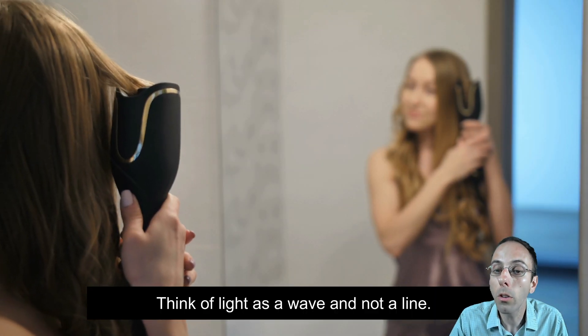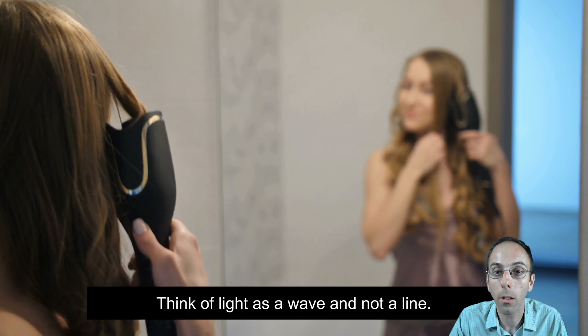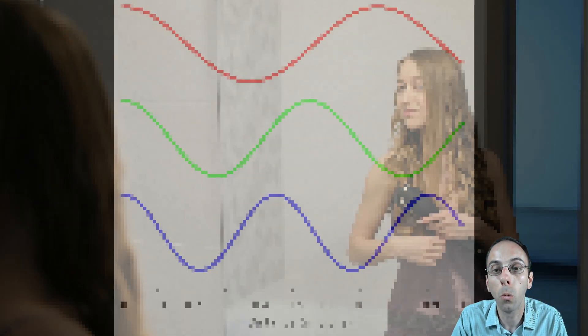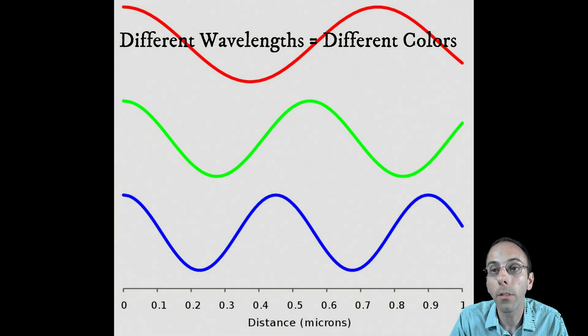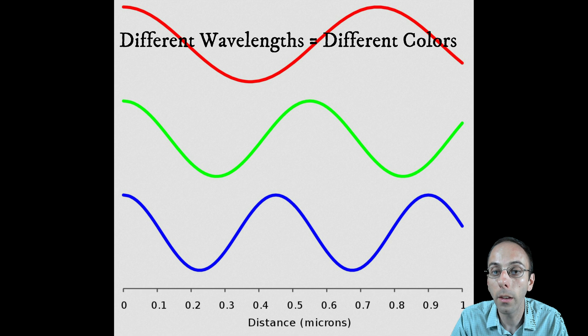So you have different wavelengths. Once you think of light as a wave and not a line, so like curling your hair, you know, it might start out straight but actually behaves more as a wave. Specifically, different wavelengths equal different colors. And we see here at the top the red being a longer wavelength, and the lower one being the blue, a different wavelength there.